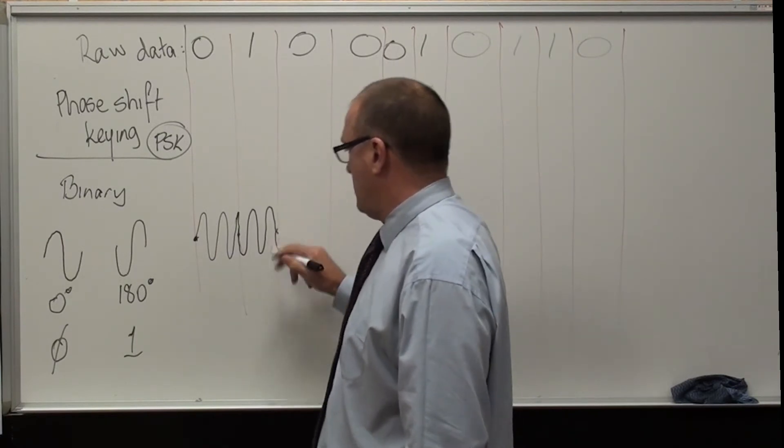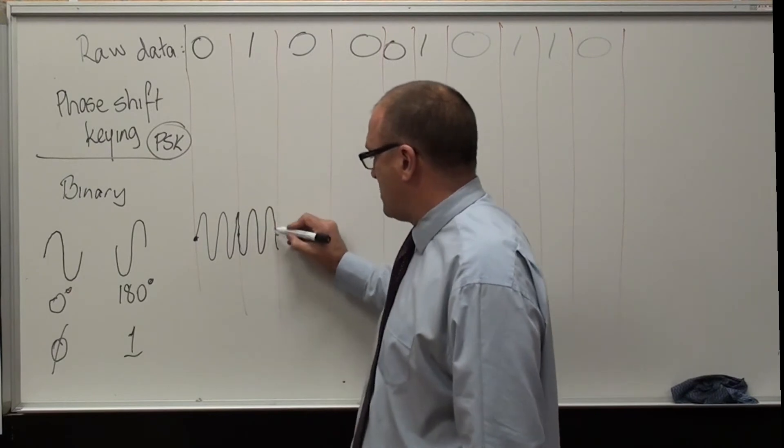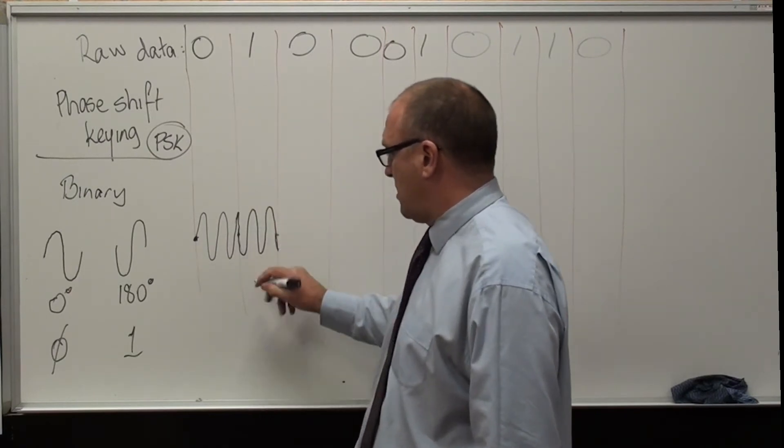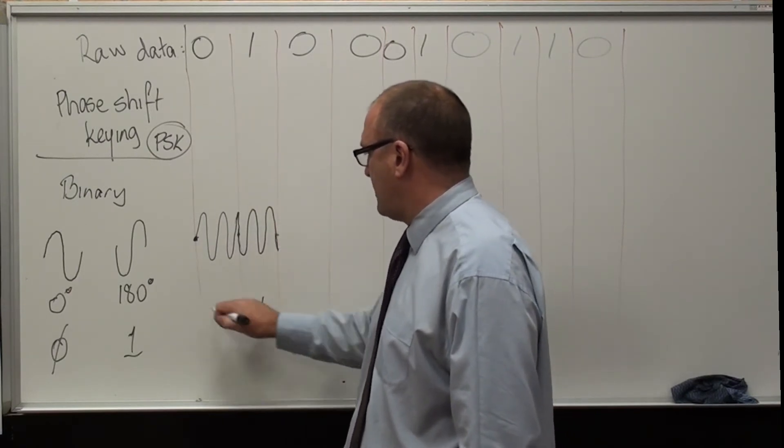To demodulate, it's exactly the same. It reads that and says, that's minus 180 degrees, so that's a one, that's a zero.